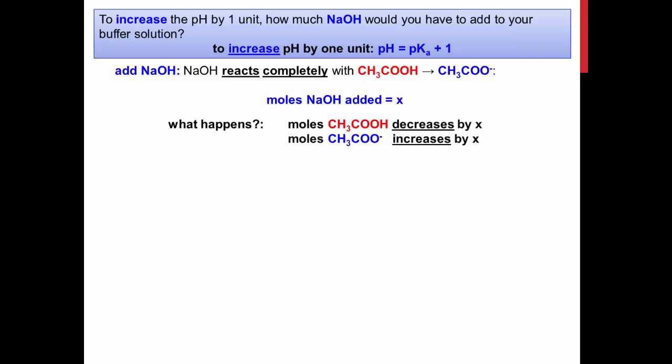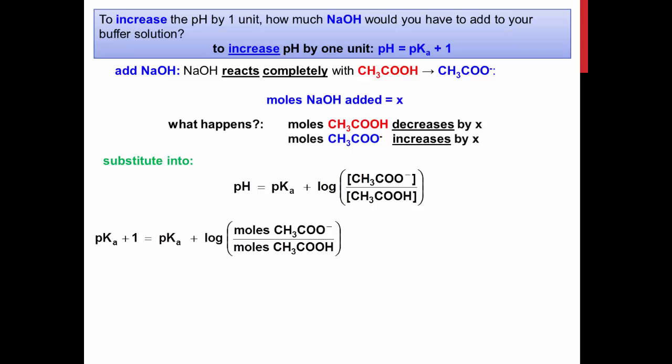Looking only at sodium hydroxide, we will call the number of moles added to the solution to cause a pH change of positive 1, x. This addition of x moles causes the moles of acetic acid to decrease by x and the number of moles of acetate to increase by x. Substituting everything into the Henderson-Hasselbalch equation, as shown on the slide, produces the expression pKa plus 1 equals the pKa plus the log of the moles of acetate plus x divided by the moles of acetic acid minus x.